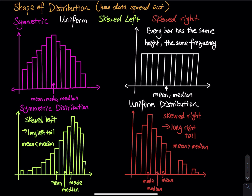The first type is extremely important in statistics — it is called symmetric distribution, and later on we call this normal distribution, with a separate chapter for that. In a symmetric distribution, the mean, the median, and the mode are right in the middle. We have one tallest bar right in the middle, and the bars on the left and right are roughly the same.